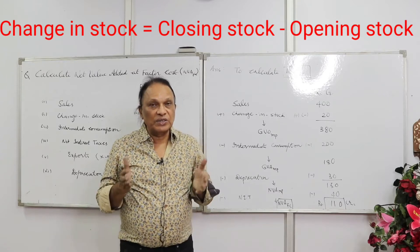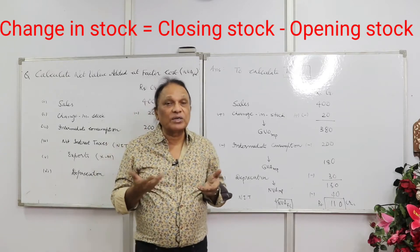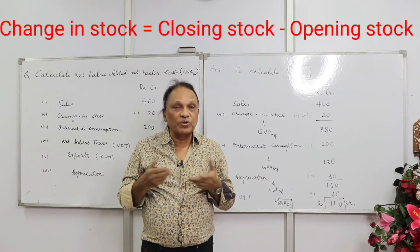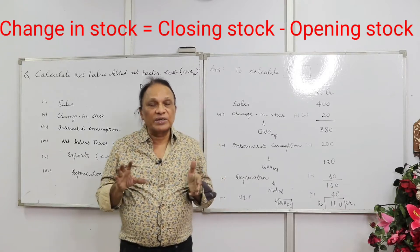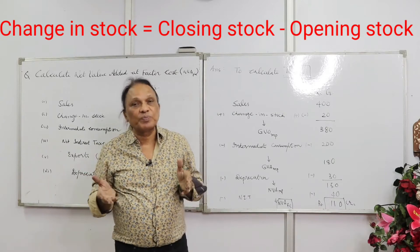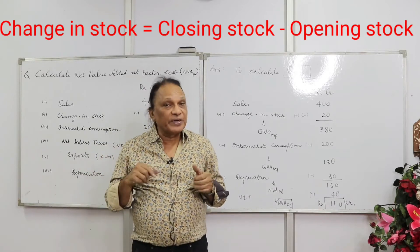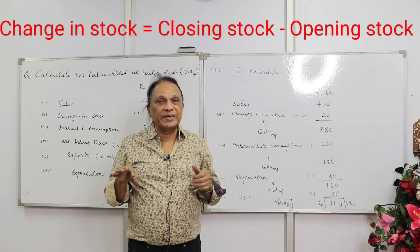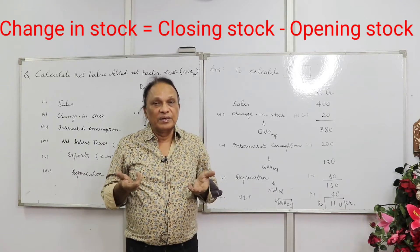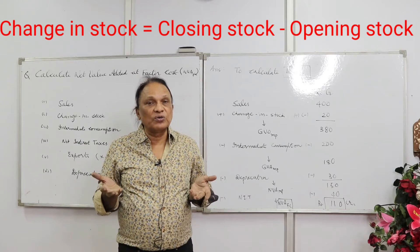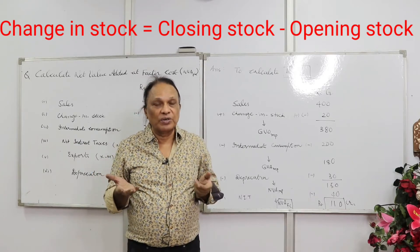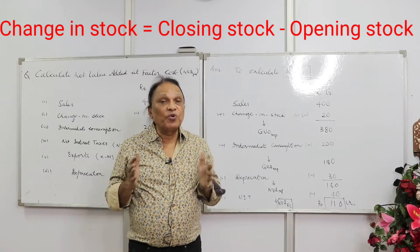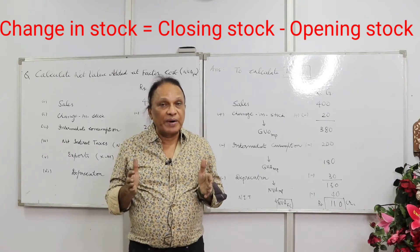To sales, add change in stock to get gross value of output. For change in stock, the formula is: change in stock equals closing stock minus opening stock — not the other way around. Some students mistake it and write opening stock minus closing stock in exams, so always remember: change in stock = closing stock minus opening stock.